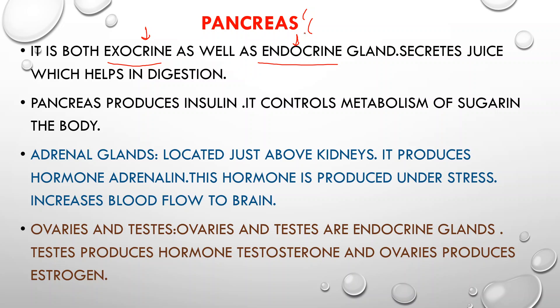Now, adrenal glands are located above the kidneys. The adrenal glands produce the adrenal hormone. When we are very stressed, this hormone is produced. This hormone increases the flow of blood to the brain.